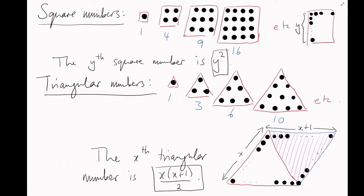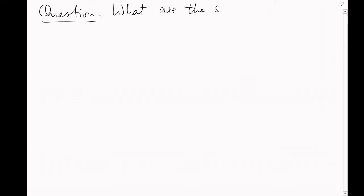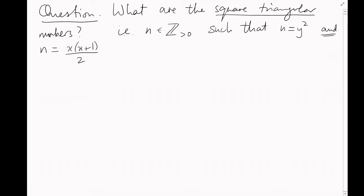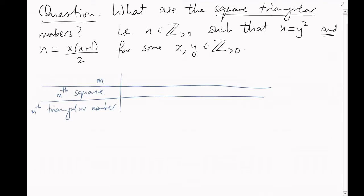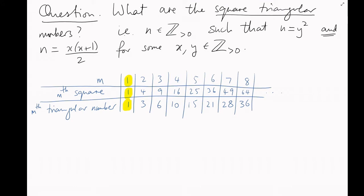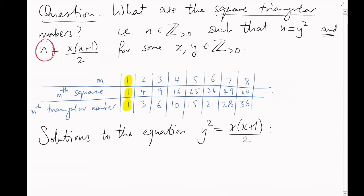Let's ask the question, what are the square triangular numbers? In other words, the positive integers n, such that n can be written as both the y-th square number and the x-th triangular number for some positive integers x and y. Well, here's a table of the squares and the triangular numbers. Notice that the first triangular number and the first square number are equal. That is, we get a solution to the equation y squared equals x times x plus 1 over 2, which is that number we called n above, by taking x equals 1 and y equals 1, which gives n equals 1.